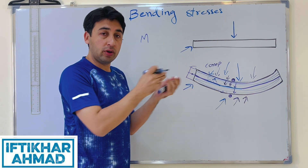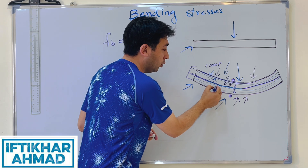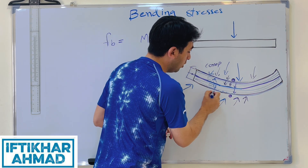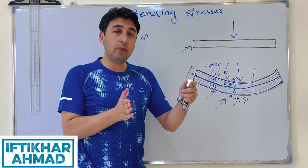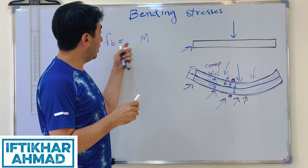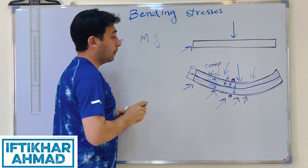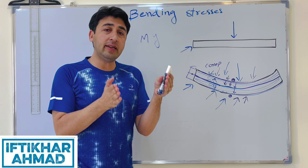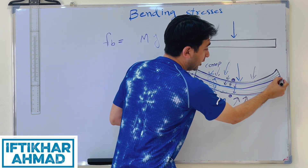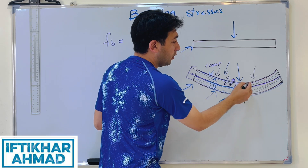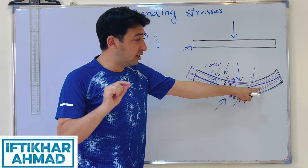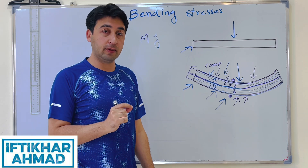Similarly, moving toward the bottom, tension increases progressively, reaching maximum tension at the extreme bottom fiber. So bending stresses are also directly proportional to the distance from the neutral axis. We can find bending stresses at any fiber — we just need to know how far that fiber is from the neutral axis.